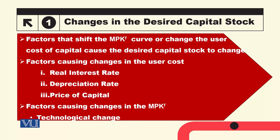Now, what are the factors that can change the user cost of capital or the marginal product of capital? We will discuss how the user cost changes if there is a change in the real interest rate, if there is a change in the depreciation rate, and if there is a change in the price of capital. If you recall the user cost, we have two types of costs.